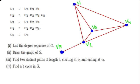So, find the two distinct paths of length 3, starting at V3 and ending at V4. So if it is of length 3, it must pass through three edges.